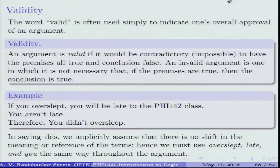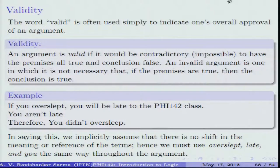An invalid argument is one where it is not necessary that if the premises are true the conclusion must be true. Deductive arguments are truth-preserving: if you assume the premises to be true, there is no way to make the conclusion false. If the premises are true, that guarantees the conclusion is also true. What is important for validity is to rule out the possibility of true premises and a false conclusion.